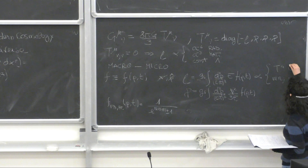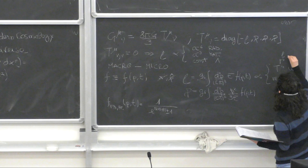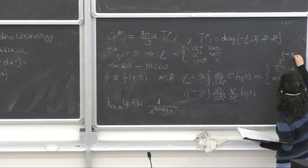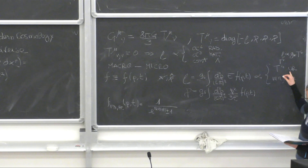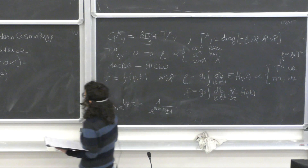When this expression is derived correctly, the density for relativistic species is proportional not only to T⁴ but also to g*, which accounts for the counting of all the relativistic degrees of freedom at the time at which we are computing the scaling of the energy density.